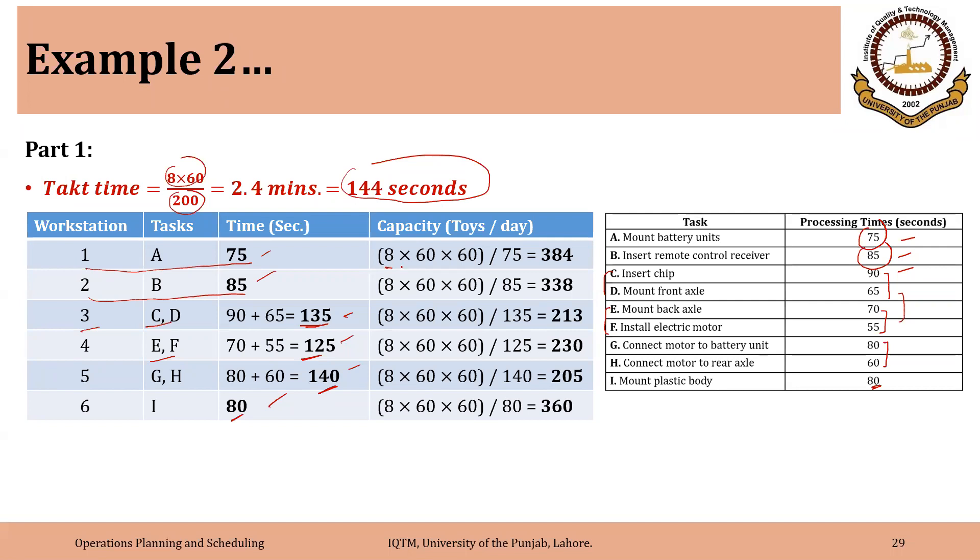So the capacity is available time divided by time per unit. So we have calculated the capacities of different workstations as well. And workstation 5 has the minimum capacity 205, but the demand is 200. So we can meet the demand. Now I hope you can figure out the cycle time as well. So as we are assuming one worker at every workstation, the cycle time is 140 seconds. So that 140 is less than 144. So we can meet the demand.